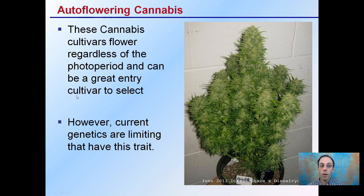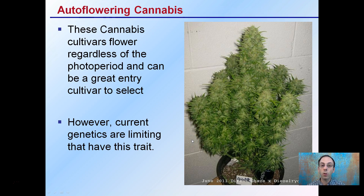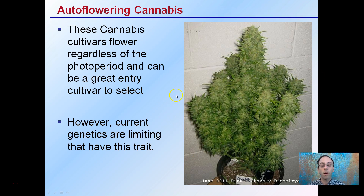There's also something called auto-flowering cannabis. These are cultivars that flower regardless of the photoperiod, and they can be great for entry-level growers. The genetics are typically a little more limiting, but they allow the grower not to worry about the photoperiod. Auto-flowering cultivars can help new growers predict when to expect flowers and harvest of their crop.